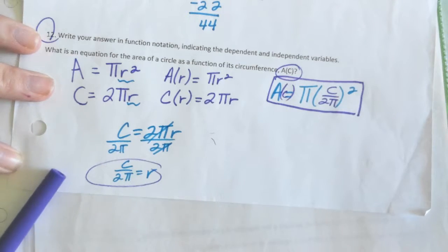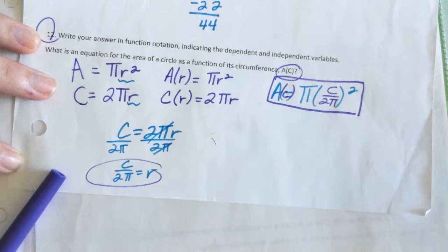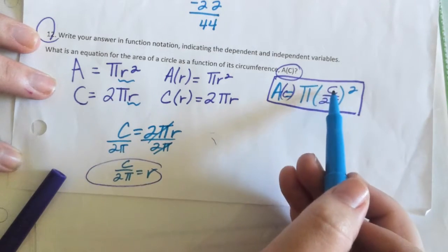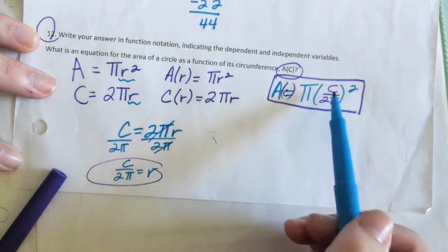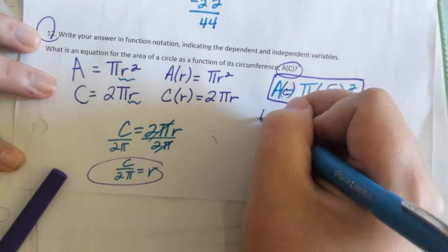But sadly, we're not done because it says we have to identify the independent and dependent variable. So in this thing that we wrote, do we need the circumference to figure out the area? Or do we need the area to figure out the circumference? You need the circumference.